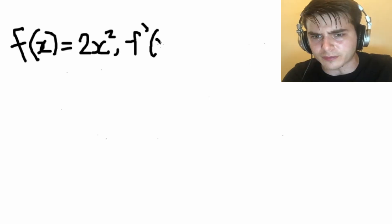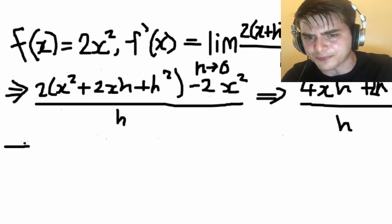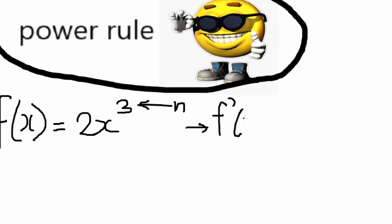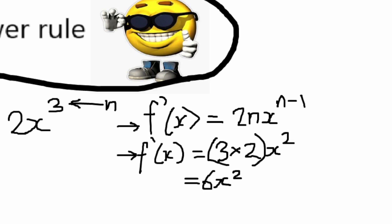Because we want to escape the matrix and reach financial freedom at 20 years old, we don't have time to use the first principles method here to solve for the derivative at any point. Instead, we use the power rule, where the derivative of a term x to the power of n is equal to nx to the power of n minus 1.